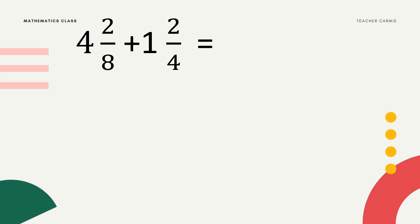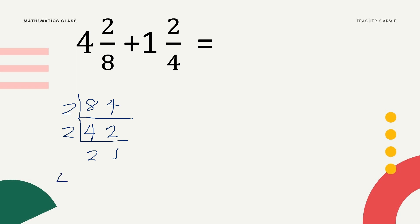Next example: 4 and 2/8 plus 1 and 2/4. We will find the LCD of 8 and 4 using continuous division. Both are divisible by 2: 8 divided by 2 is 4, and 4 divided by 2 is 2. Again, both 4 and 2 are divisible by 2: 4 divided by 2 is 2, and 2 divided by 2 is 1. We can't divide further, so we multiply the outer numbers: 2 times 2 times 2 times 1 equals 8.